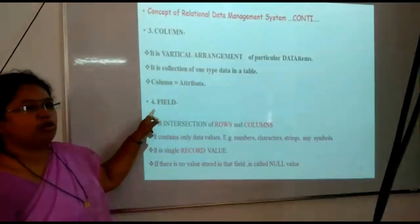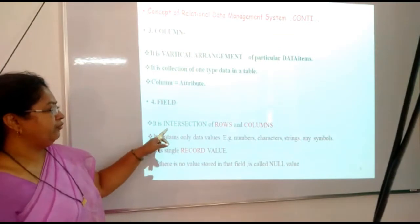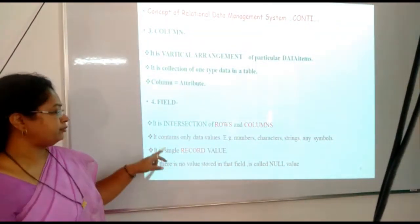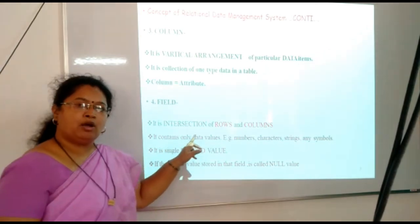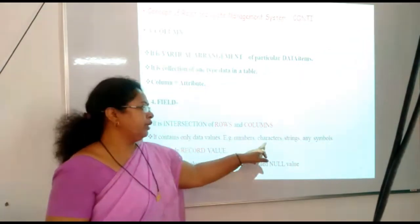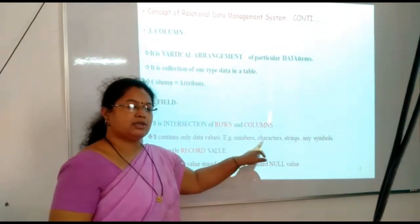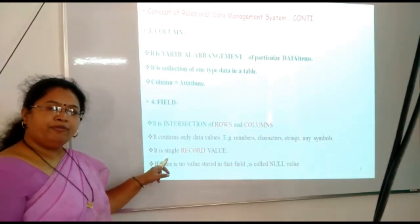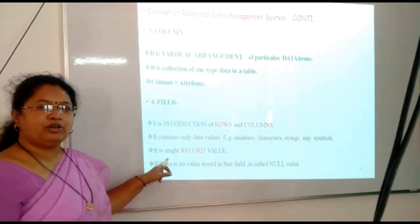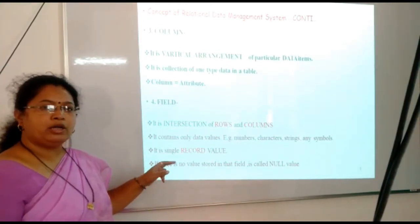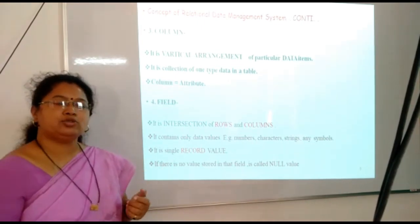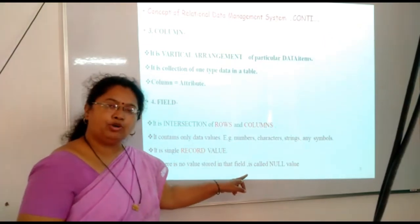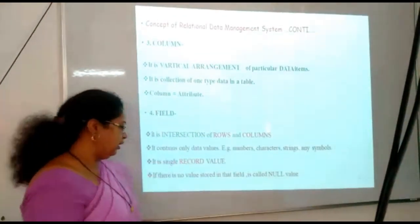The next component is field. Field is nothing but the intersection of rows and columns. It contains only data values — for example, characters, numbers, fractional points, strings, or any other symbols. Only a single data value can be stored in one field. If there is no data value stored in that particular field, that field is called a null value.